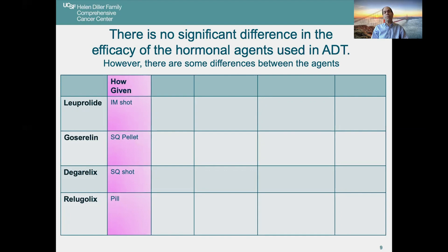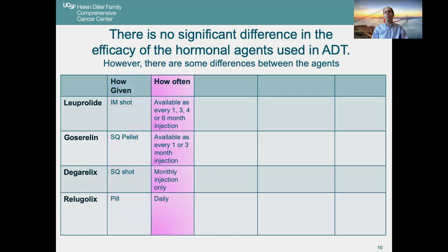First, there's how the drug is given. Leuprolide or Lupron is given as a shot in the buttocks. Goserelin is a small pellet inserted under the skin. Degarelix is a shot, and relugolix is a pill. There are also differences in how often you need to take it — a shot can be given as infrequently as every six months, though Degarelix is available only as a one-month shot, and relugolix is a daily pill.